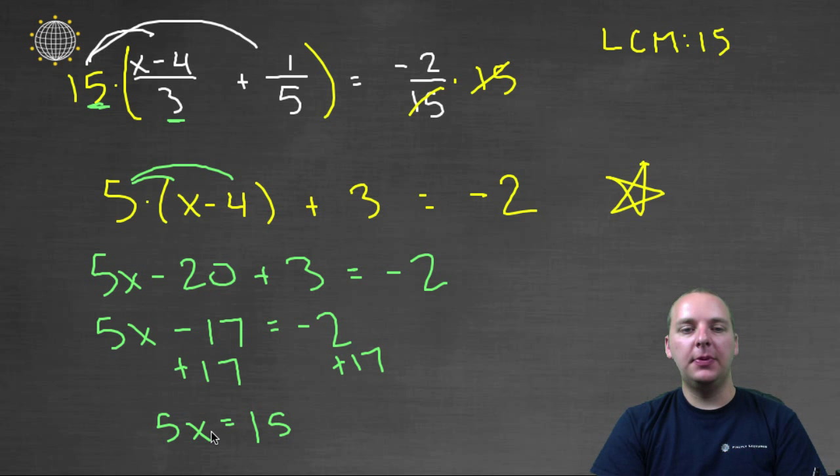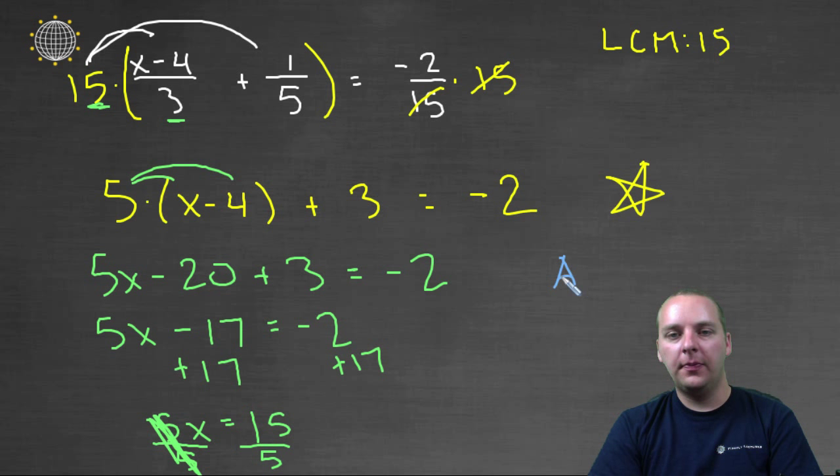And the last step is to divide both sides by the variable's coefficient. Divide by five and divide by five. The fives cancel, and so we get our answer of x equals three. That's fifteen divided by five.